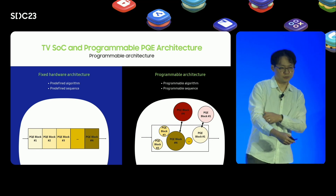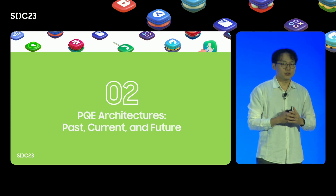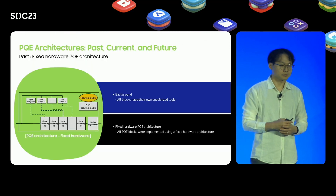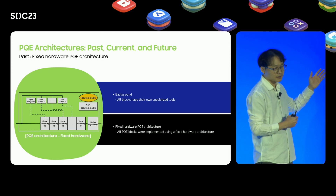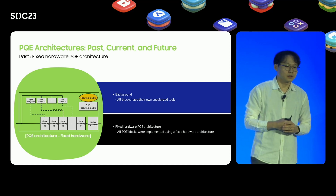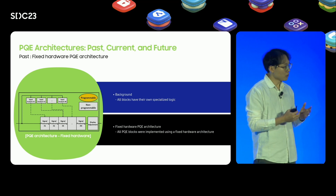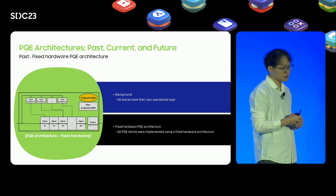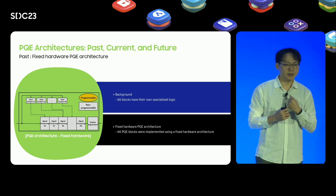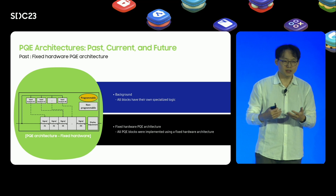Before going further, I will explain what the current PQE architecture is like and what direction we are going to move forward. Here is the PQE architecture from the past. Each block has its specialized logic and predefined position in the pipeline. Therefore, it was a natural step to design all blocks in fixed hardware. Although fixed architecture has no flexibility at all, it was the best choice. So customers who purchased our TV devices could only be provided the picture quality available at the time of purchase, even though we continuously developed advanced algorithms.